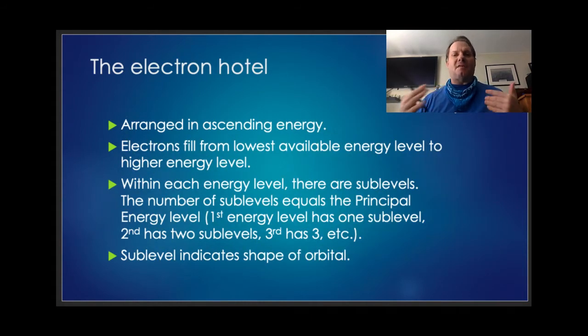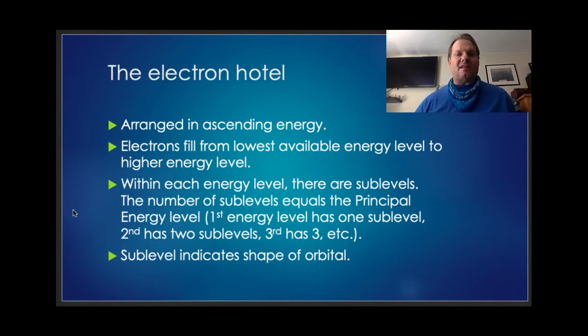Now when I think about the arrangement of these electrons, they all kind of fit within the same architecture. I like to think about it as kind of a hotel for electrons. So they're arranged in an ascending energy. Electrons fill from the lowest available energy level to the higher energy levels. So they go from the bottom to the top. Within each energy level there are sub-levels. The number of sub-levels equals the principal energy level. So the first energy level has one sub-level, energy level 2 has two sub-levels, principal energy level 3 has three sub-levels, etc. And these sub-levels themselves indicate the shape of the orbital. And we'll talk a lot more about that as we go on.